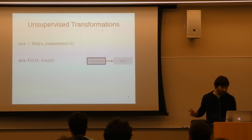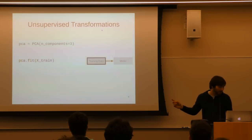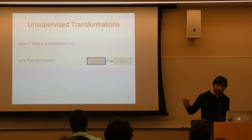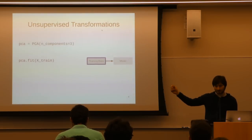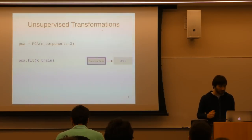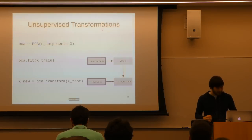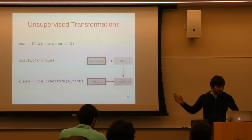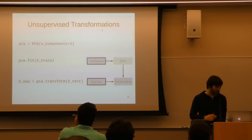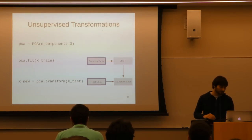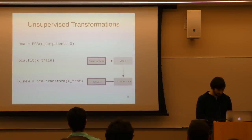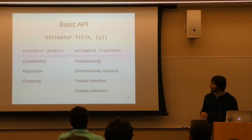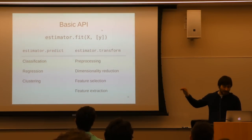Another frequently used class of models is unsupervised transformations, like PCA. You have training data, call fit() without labels because it's unsupervised, and this gives you a model of the principal components — the directions of highest variance. Then you can call transform() on new data X_test, reducing it to, say, three principal components learned from your training set.